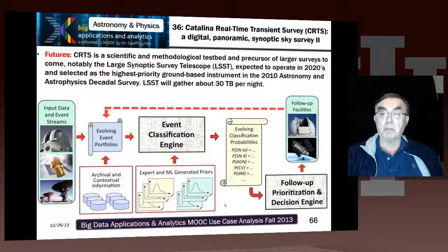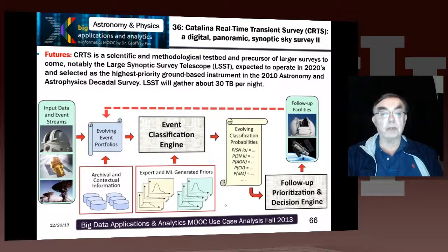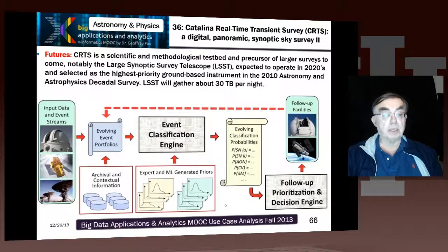The LSST is meant to operate in the early 2020s. It has very high priority in astronomy and has a process to decide what the field wants to do. LSST will take that 0.1 terabyte per night and make it about 30 terabytes per night. This slide shows the actual classification process.